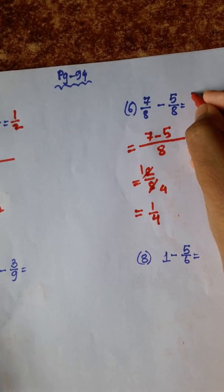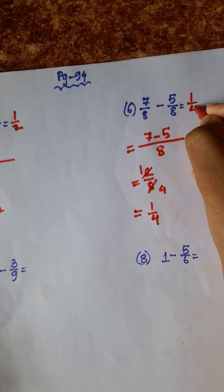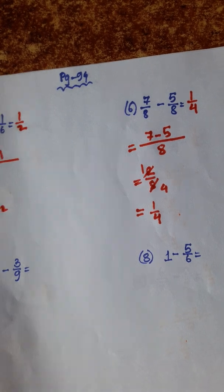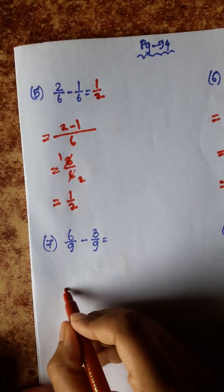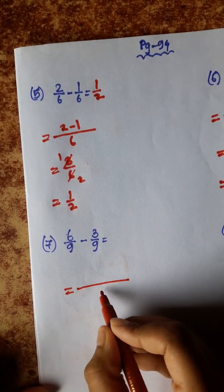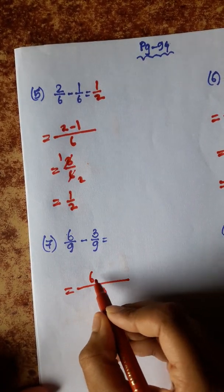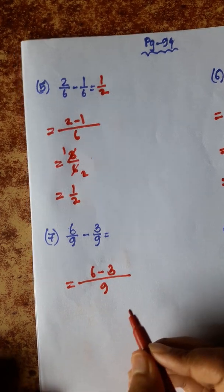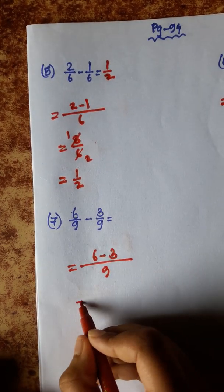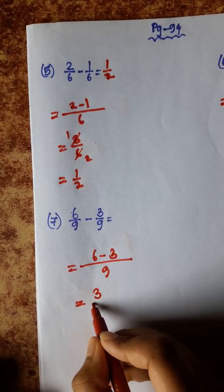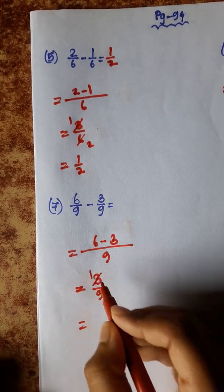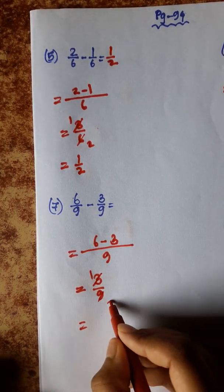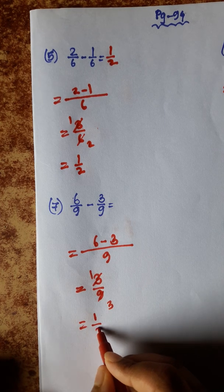Number 7: 5 by 6. Number 8: 6 by 9 minus 3 by 9. Denominator 9, 6 minus 3 is 3 by 9. Cancelling: 3 divided by 3 is 1, 9 divided by 3 is 3 — so 1 by 3.